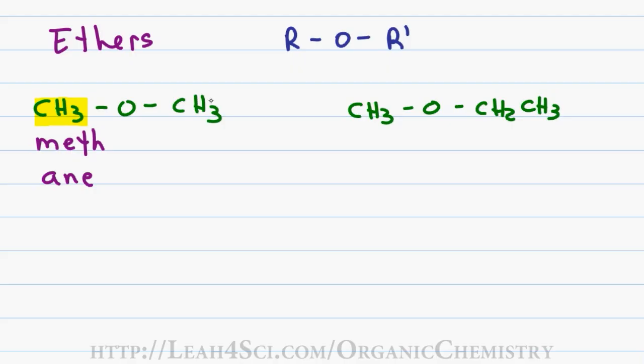The shorter carbon chain attached to the oxygen becomes an alkoxy substituent where you simply take the prefix for the carbon number and add the word oxy. In this case we'll have methoxy since carbon 1 is understood we ignore the number giving this a final name of methoxymethane.